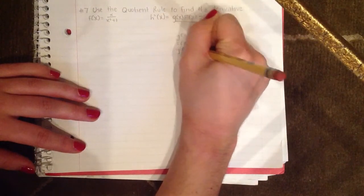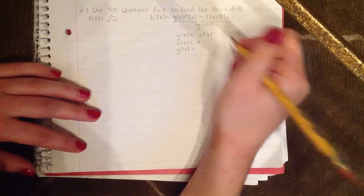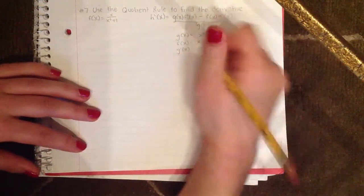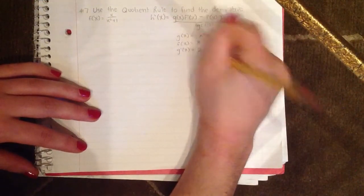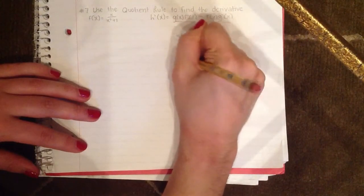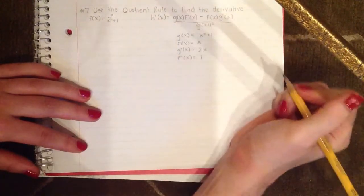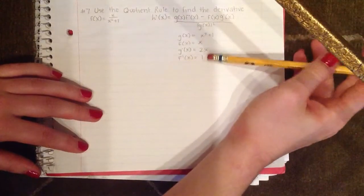g'(x) is the derivative of x² + 1, so it would be 2x. And f'(x) will equal 1, because the derivative of x equals 1.